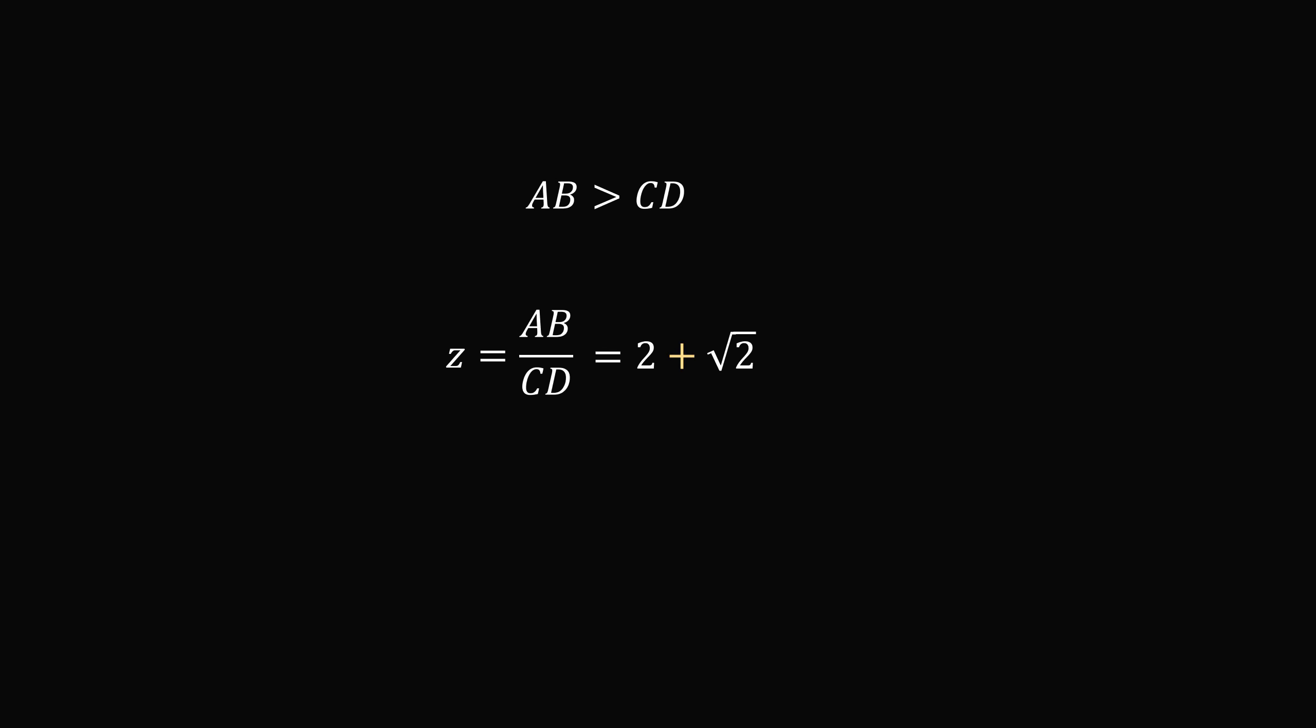Thus AB over CD is equal to 2 plus the square root of 2. And that's the answer.